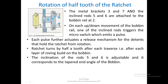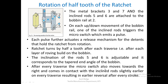The inclination of rods 5 and 6 is adjustable and corresponds to the tapered end angle of the bobbin. If this is the taper angle, the inclined rod is at the same angle as the desired taper in the bobbin. After every traverse the micro switch also moves towards the right.